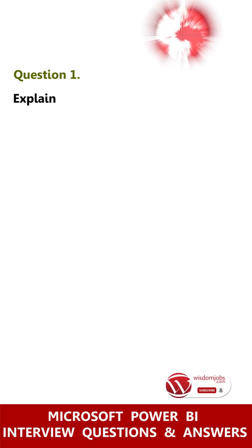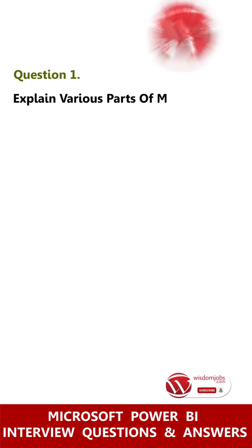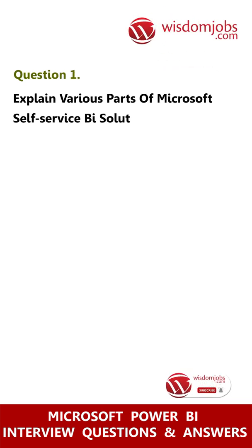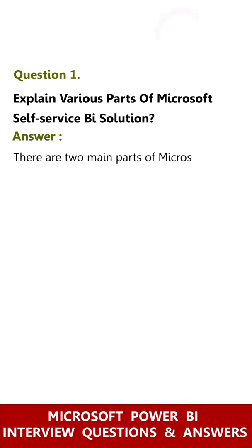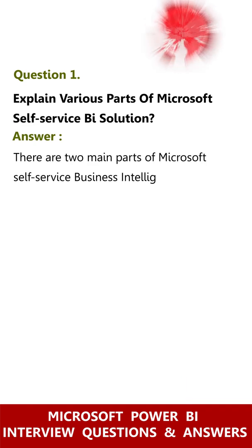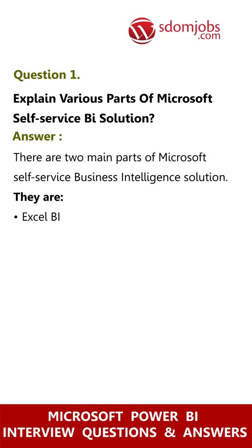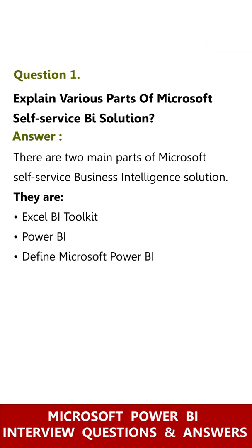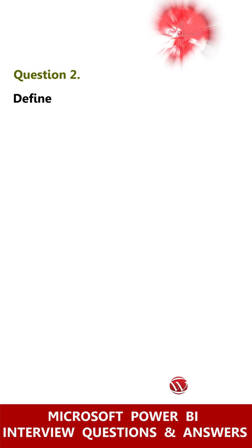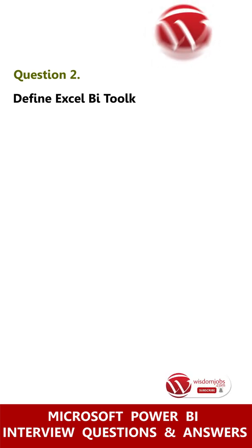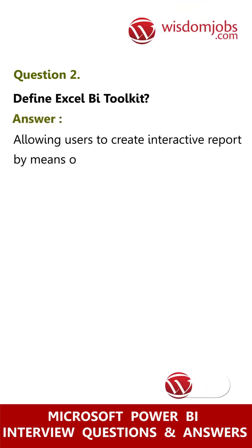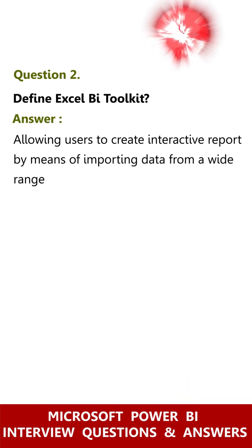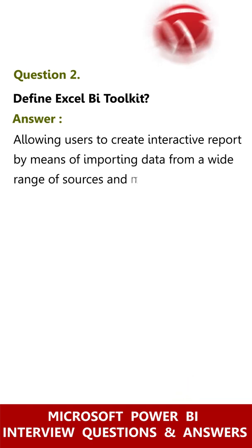Question 1: Explain various parts of Microsoft self-service BI solution. Answer: There are two main parts of Microsoft self-service business intelligence solution — they are Excel BI toolkit and Power BI. Question 2: Define Excel BI toolkit. Answer: It allows users to create interactive reports by means of importing data from a wide range of sources and modeling data according to requirement.